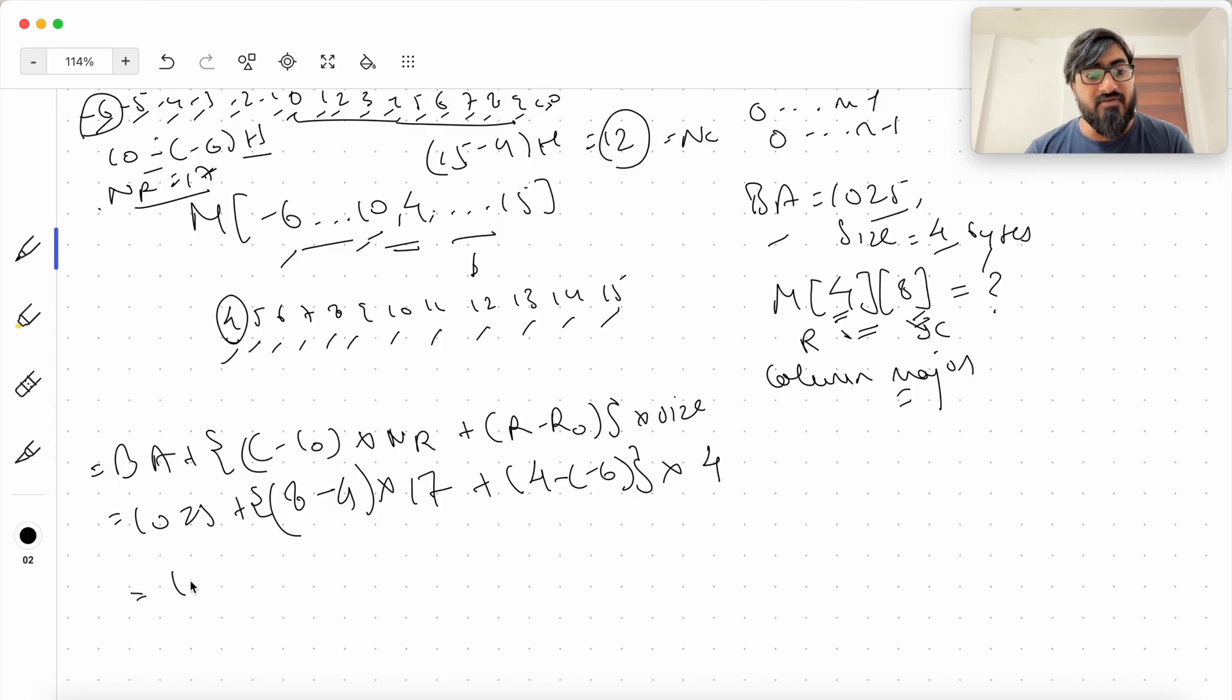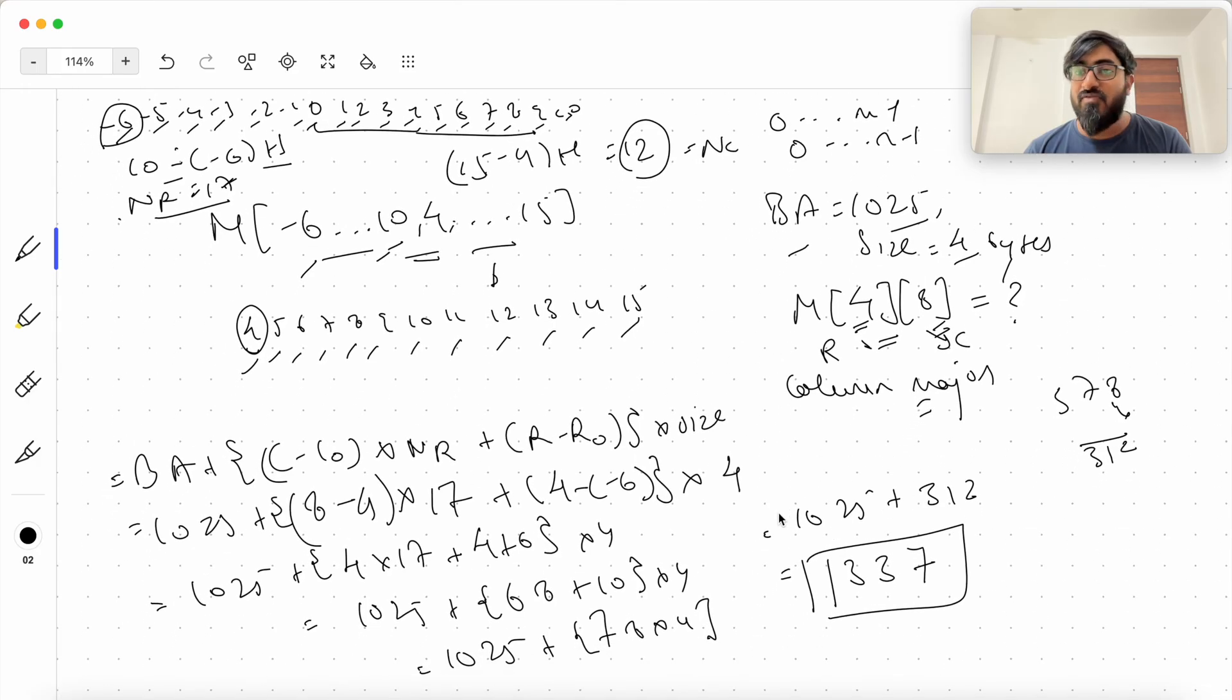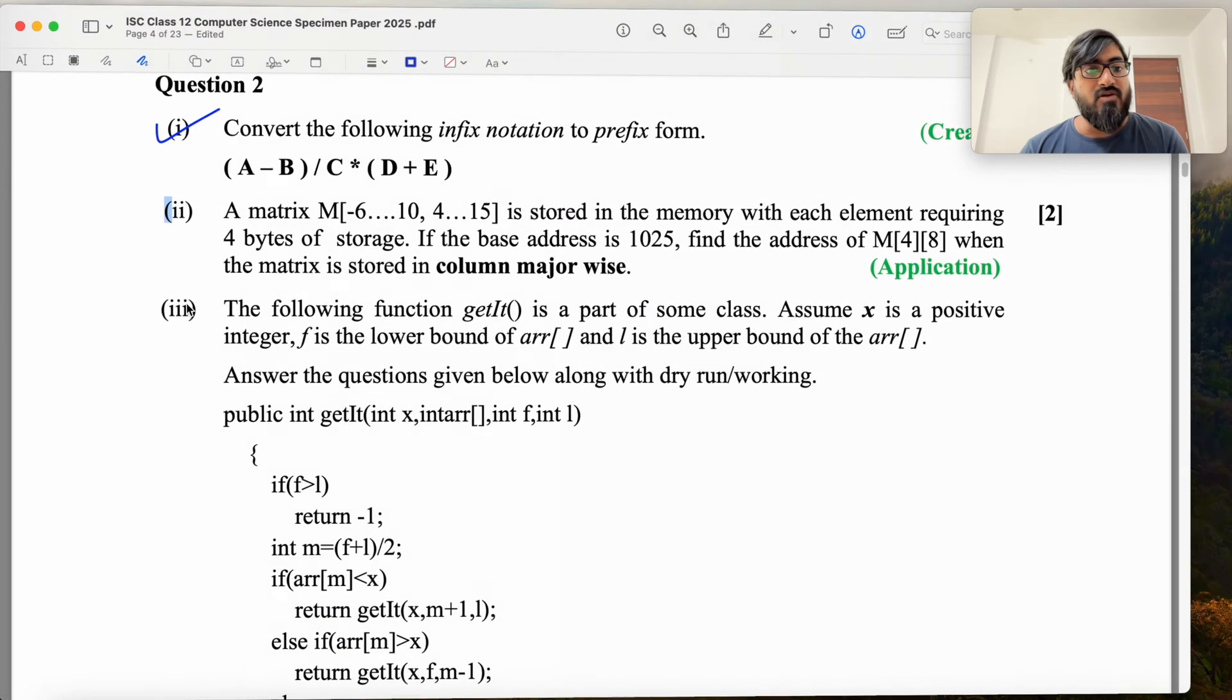Number of rows are 17 plus R, R is 4. So this is C, this is R. 4 minus R0 is the first row, which is minus 6. Into size, which is 4. You plug in these values. You find the final answer 1025 plus 8 minus 4 is 4 into 17 plus 4 plus 6, which is 10 into 4. Which is equal to 1025 plus 68 plus 10 into 4, which is 1025 plus 78 into 4 is equal to 1337. And this is your answer. And I have already posted a video where I explain in detail how you arrive at this formula. So your second part is done.